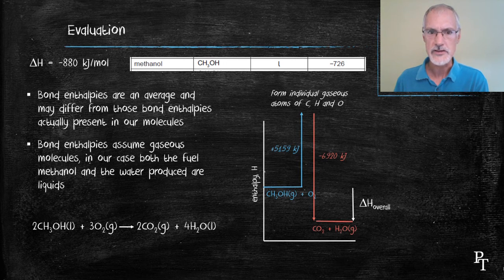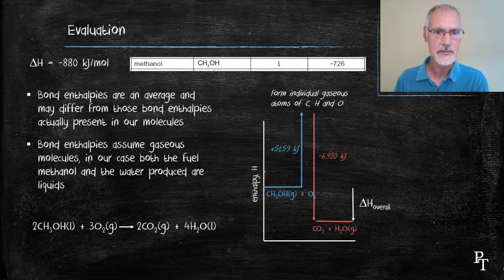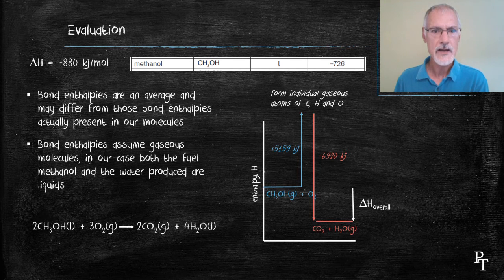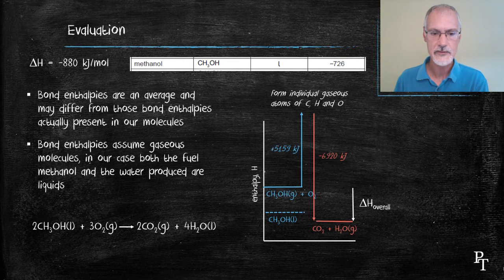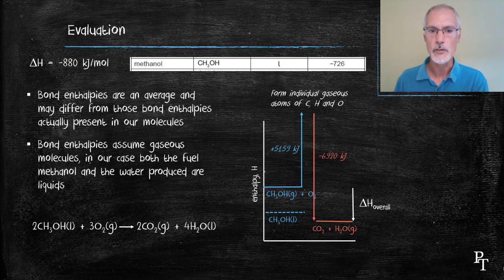Let's look at how those values might be changed. So here I have a copy of our enthalpy diagram. If I begin with methanol liquid, methanol liquid actually has less energy or less enthalpy than methanol gas. So I actually would be beginning at a lower point.